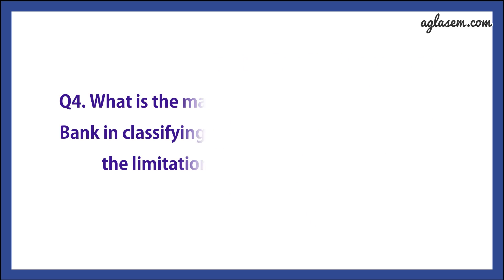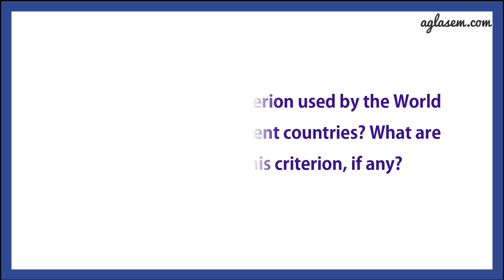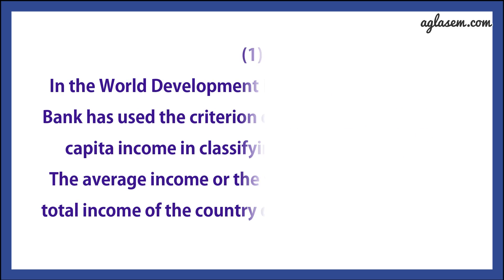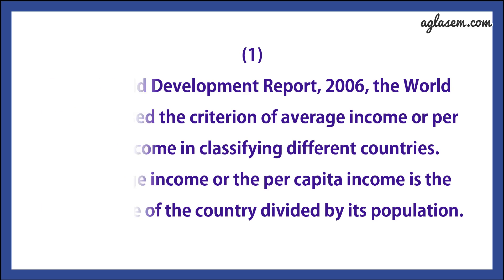Question number 4 says: what is the main criteria used by the World Bank in classifying different countries? What are the limitations of this criteria, if any? Answer: in the World Development Report of 2006, the World Bank has used the criteria of the average income or per capita income in classifying different countries. The average income or per capita income is the total income of the country divided by its population.